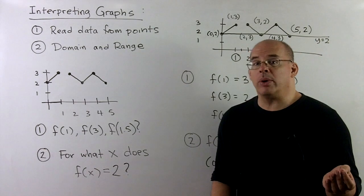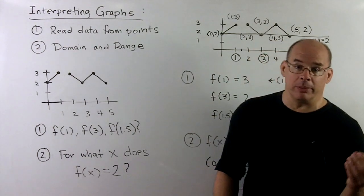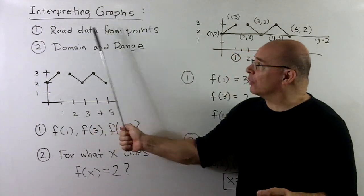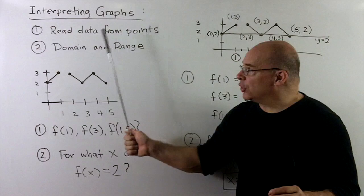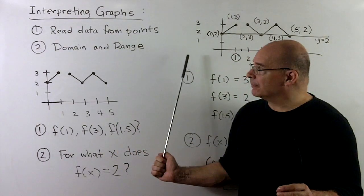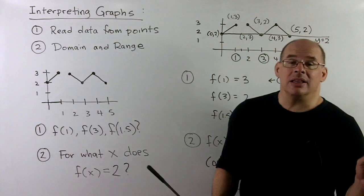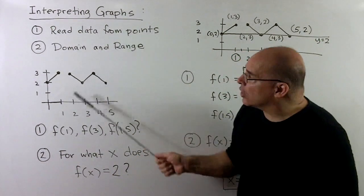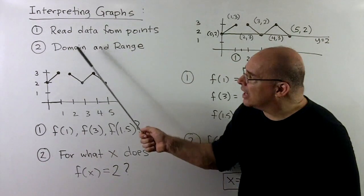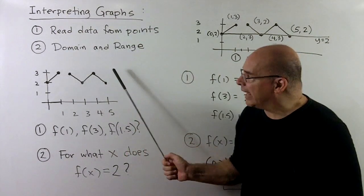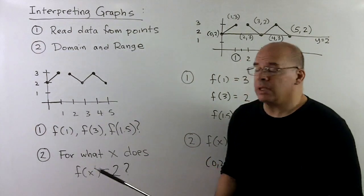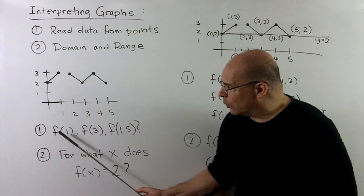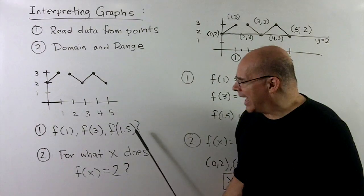Now, once we know we have a function, we want to be able to extract data from the graph. Two skills we want to develop. We want to be able to read data from points in the graph. And we want to be able to find the domain and range of the function. For the first part, let's consider the following graph of a function. We see we passed the vertical line test here. Every vertical line cuts in either zero or one place.